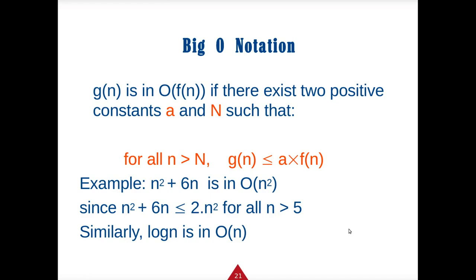As a refresher on big O notation: if the function g(n) is in big O of f(n), there exist two positive constants a and N such that for all n greater than N, g(n) is less than a times f(n). For example, if the complexity is n squared plus six, the big O is O(n squared) — basically whatever the maximum exponential value is defines your big O.